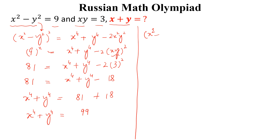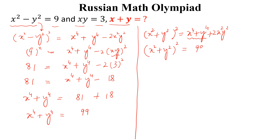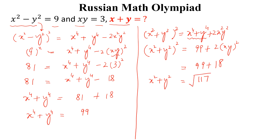Next, we know that (x² + y²)² equals x⁴ + y⁴ + 2x²y². The value of x⁴ + y⁴ is 99, so (x² + y²)² = 99 + 2·(xy)² = 99 + 2·9 = 99 + 18 = 117. Therefore x² + y² = √117.